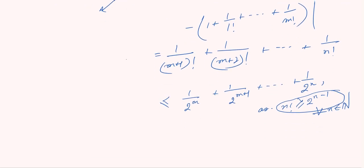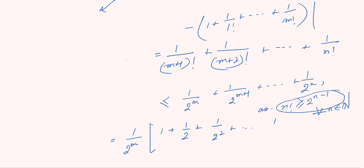We can take 1 by 2^m common, giving us 1 plus 1/2 plus 1 by 2 squared plus dot dot dot plus 1 by 2^(n minus m plus 1). As you can see, this forms a geometric progression.